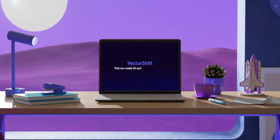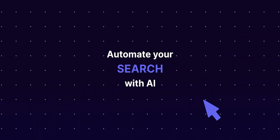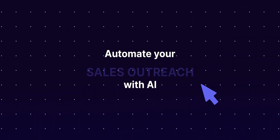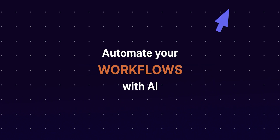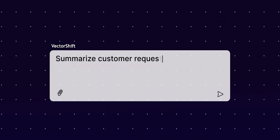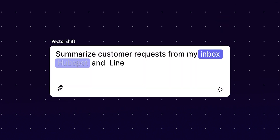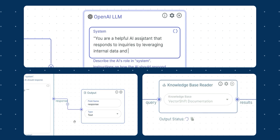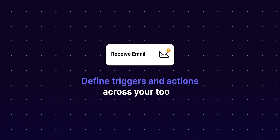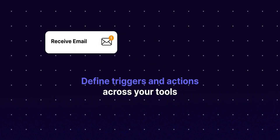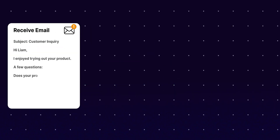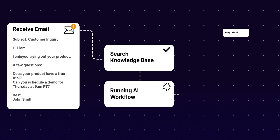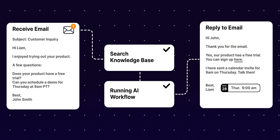VectorShift is a no-code generative AI platform that allows companies and individuals to build and deploy chatbots, search engines, AI assistants, and workflow automations in minutes. Thanks to VectorShift's no-code interface, it doesn't require any coding knowledge, and presents a really intuitive way to make your business run on full steam.